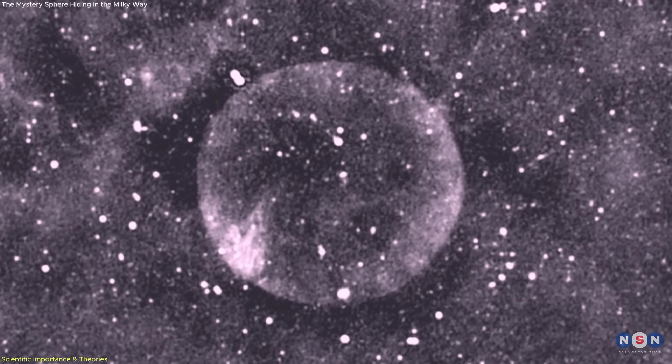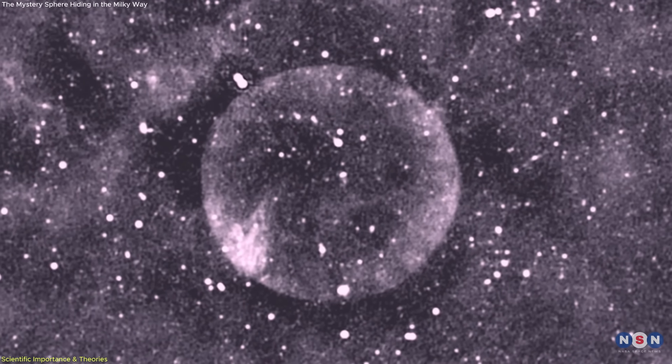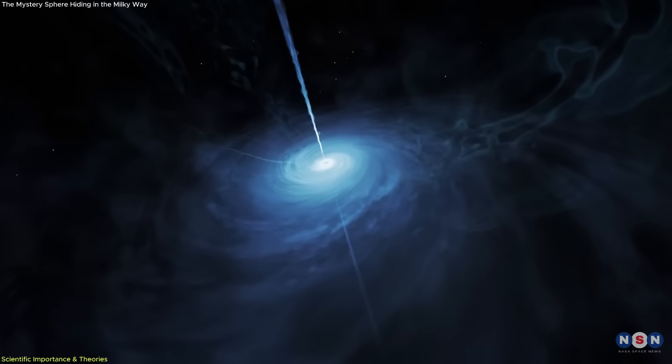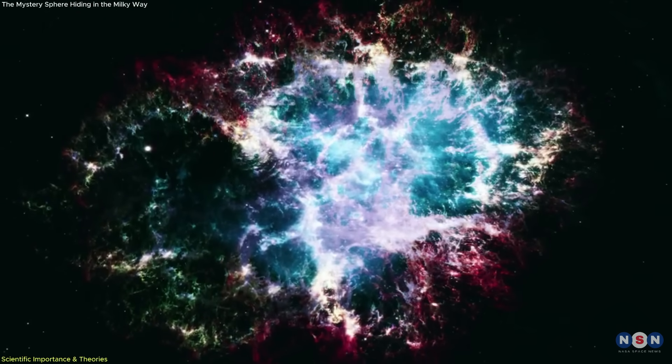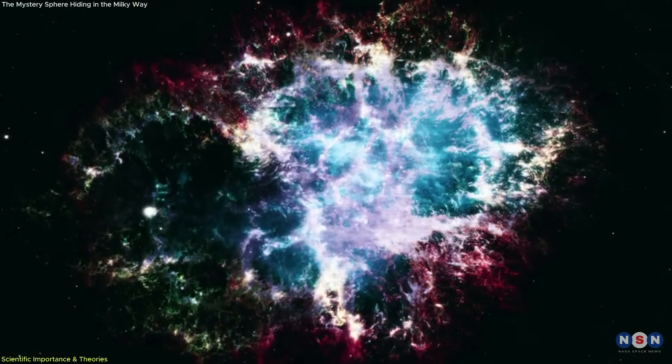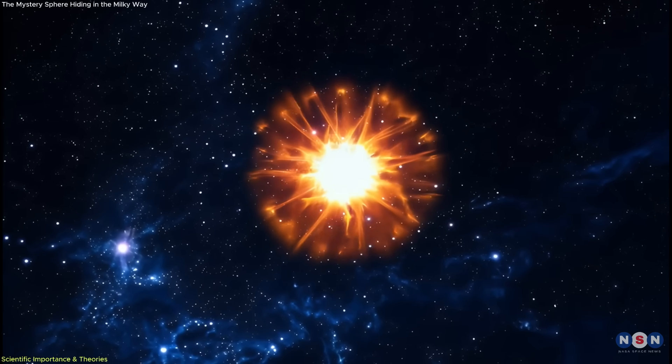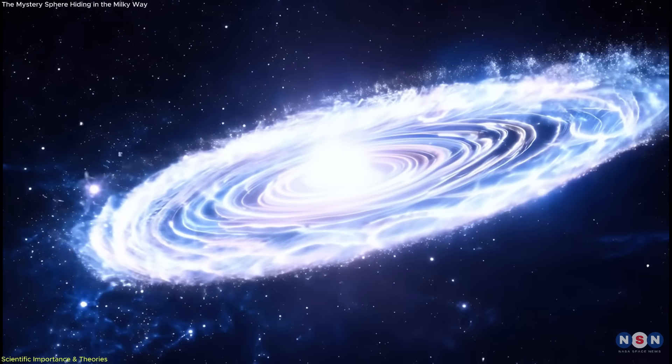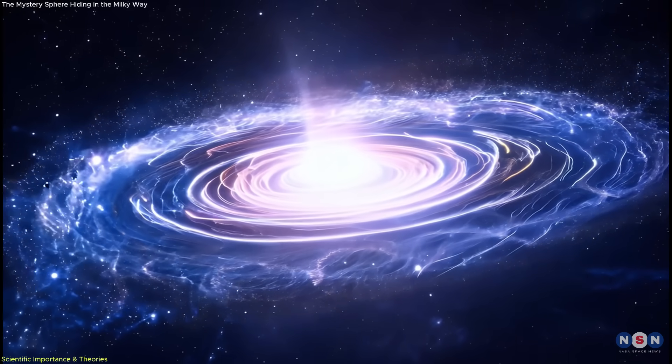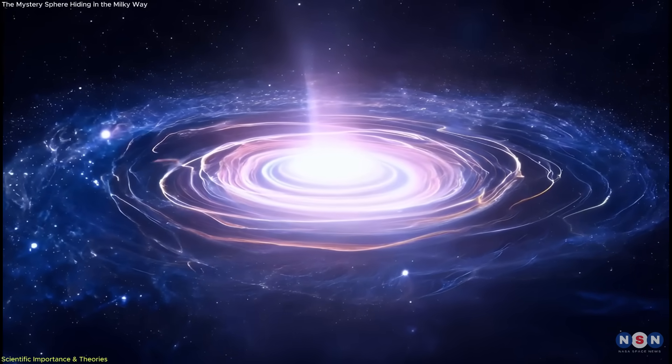As the buzz around Teleos grew, so did the questions. What kind of event could create something so precise in a universe that rarely deals in straight lines or perfect circles? In theory, the answer might seem simple. When a star explodes, it sends out a blast wave that should spread evenly, like ripples in a pond.